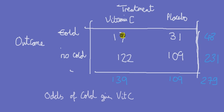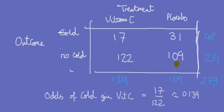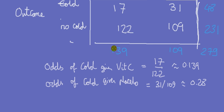The odds of a cold given vitamin C would be 17 divided by 122, because under vitamin C, 17 had a cold and 122 did not — giving about 0.139. Since this odds is less than 1, it tells us the chance of getting a cold is smaller than the chance of not getting a cold. We do the same for the placebo group: 31 divided by 109, which is about 0.28. The odds of a cold given vitamin C is around half the size of that for the placebo group.